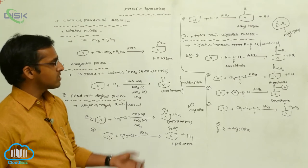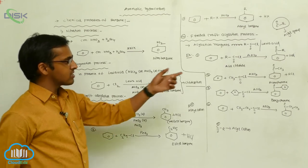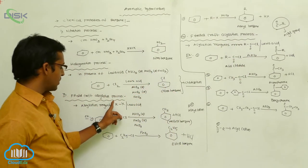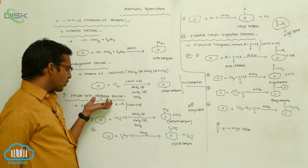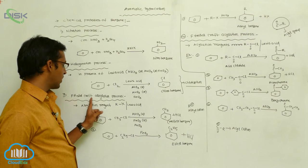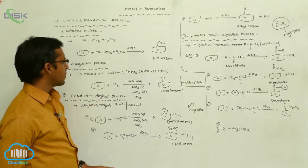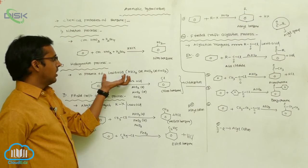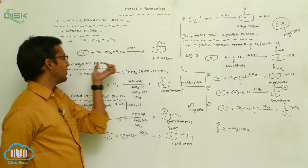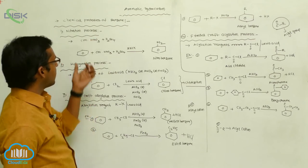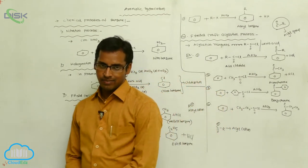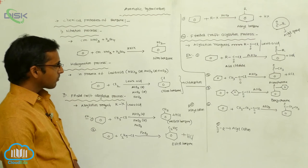In summary: Friedel-Crafts acylation means introducing an acyl group on benzene in the presence of acid chloride and Lewis acid. Friedel-Crafts alkylation means introducing an alkyl group on benzene using alkyl halide with Lewis acid. Halogenation involves reaction with halogens in presence of Lewis acid to give chlorobenzene (chlorination) or halogenobenzene (halogenation). The nitration process uses concentrated H2SO4 and concentrated HNO3 as reagents.